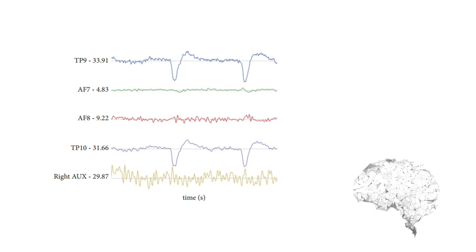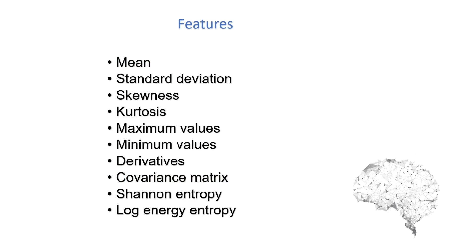Brainwave data is non-linear and non-stationary in nature, and single real values cannot be used to indicate the classes. This arouses the necessity of statistical attributes, fulfilled by using a windowing method. The statistical features used in the research are mean, standard deviation, skewness, kurtosis, maximum values, minimum values, derivatives, covariance matrix, Shannon entropy, and log energy entropy.